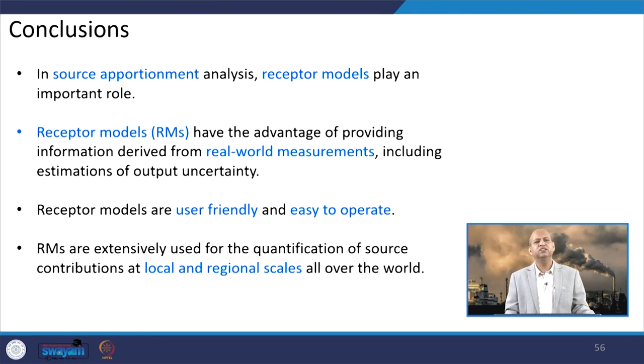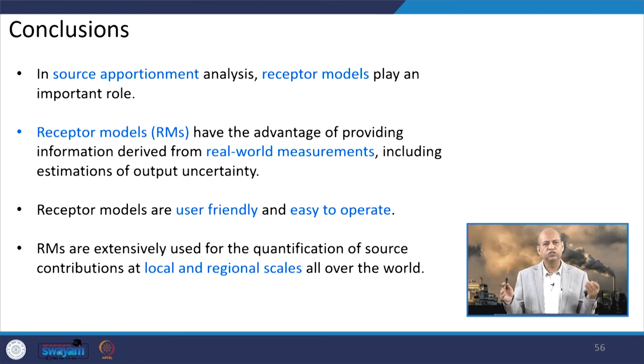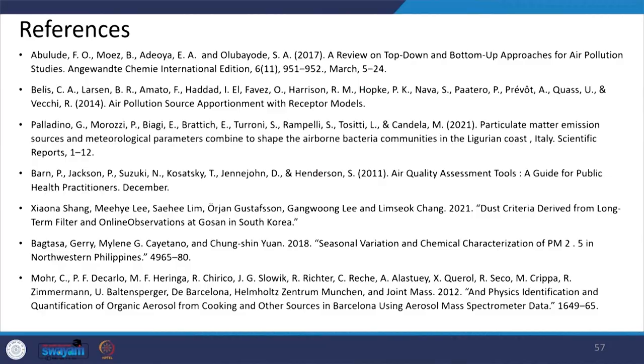In conclusion, receptor models play a very important role in source apportionment analysis. They provide advantages of information derived from real-world measurements including output uncertainty estimation, are user-friendly and easy to operate, and are extensively used worldwide for quantification of source contributions at local and regional scales. These are the references for additional information. Thank you for your kind attention; see you in the next lecture.